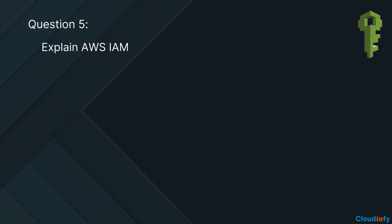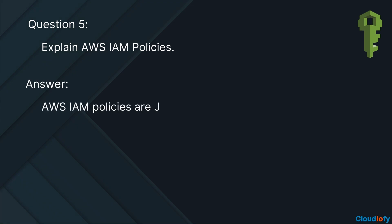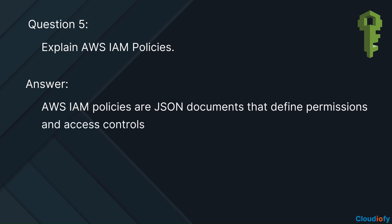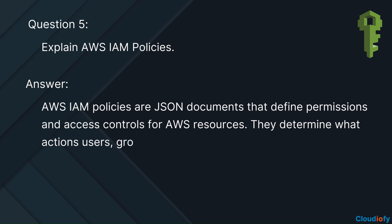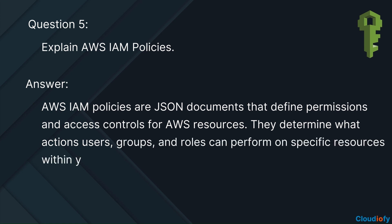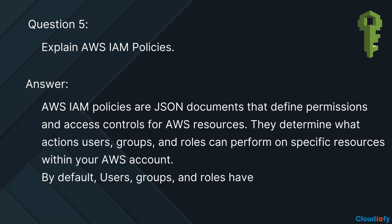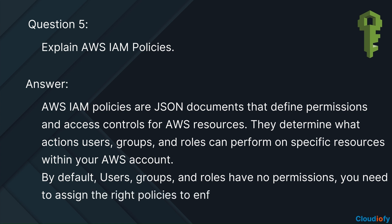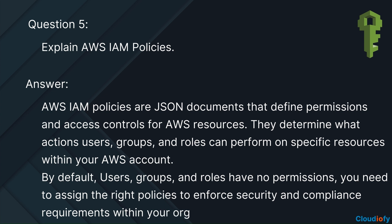Explain AWS IAM policies. AWS IAM policies are JSON documents that define permissions and access controls for AWS resources. They determine what actions users, groups, and roles can perform on specific resources within your AWS account. By default, users, groups, and roles have no permissions, so you need to assign the right policies to enforce security and compliance requirements.